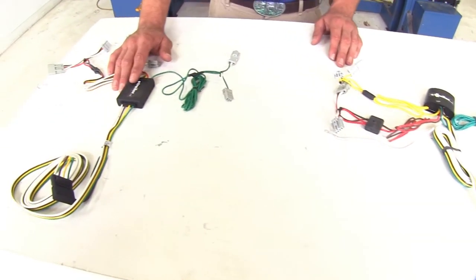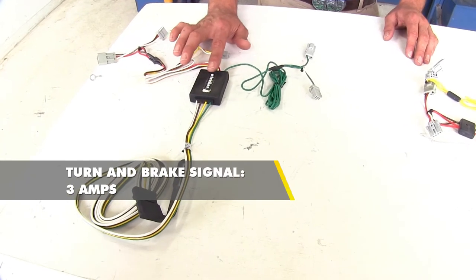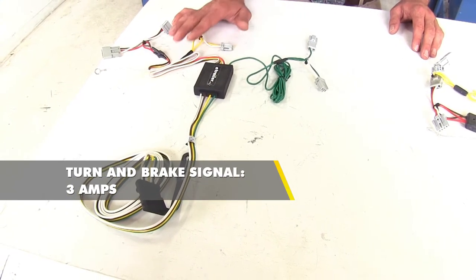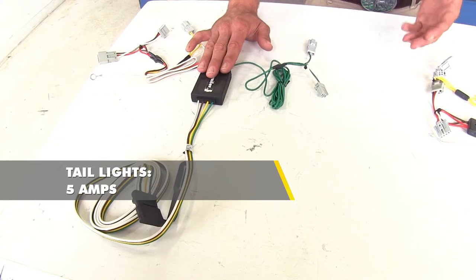With the Curt, it's going to be slightly higher. We've got 3 amps instead of the 2.1 on the turn and the brake signals and still the same 5 amps for our running lights.